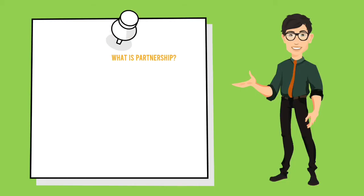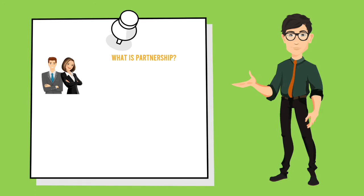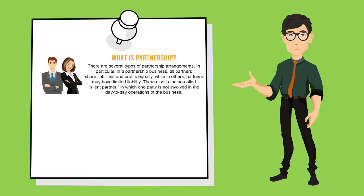What is partnership? Partnership is a formal arrangement by two or more parties to manage and operate the business and share its profits. There are several types of partnership arrangements. In a general partnership, all partners share liabilities and profits equally, while in others, partners may have limited liability. There is also the so-called silent partner, in which one party is not involved in the day-to-day operations of the business.